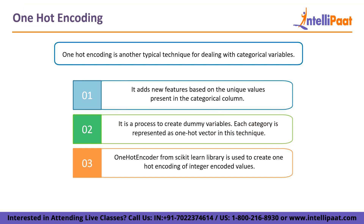Moving on to one-hot encoding — the action of converting is known as encoding. One-hot encoding converts categorical data into numeric data by splitting the column into multiple columns. Depending on which column contains what values, the numbers are replaced by ones and zeros. One-hot encoding adds new features based on the unique values present in the categorical column. It is a process to create dummy variables. Each category is represented as a one-hot vector in this technique. One-hot encoder from the sklearn library is used to create one-hot encoding of integer encoded values.